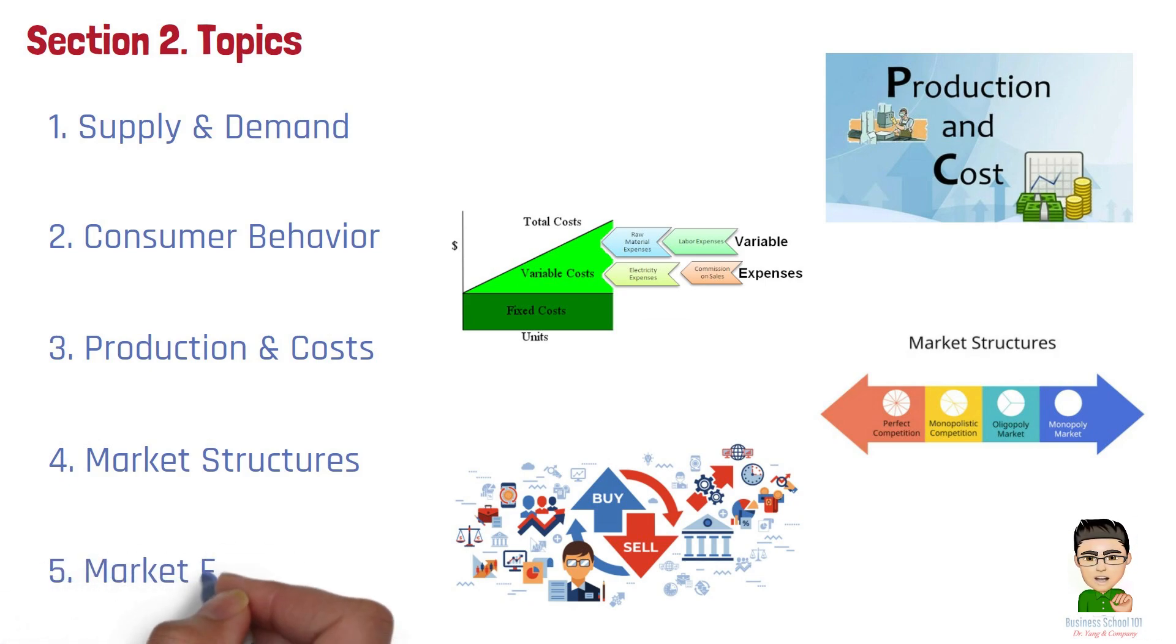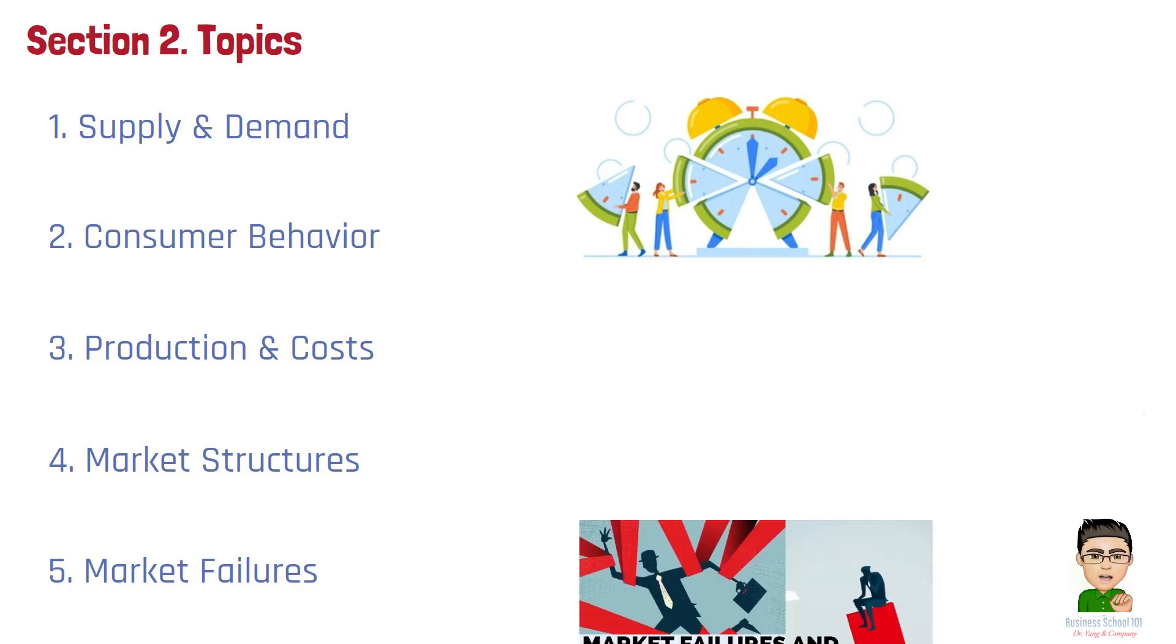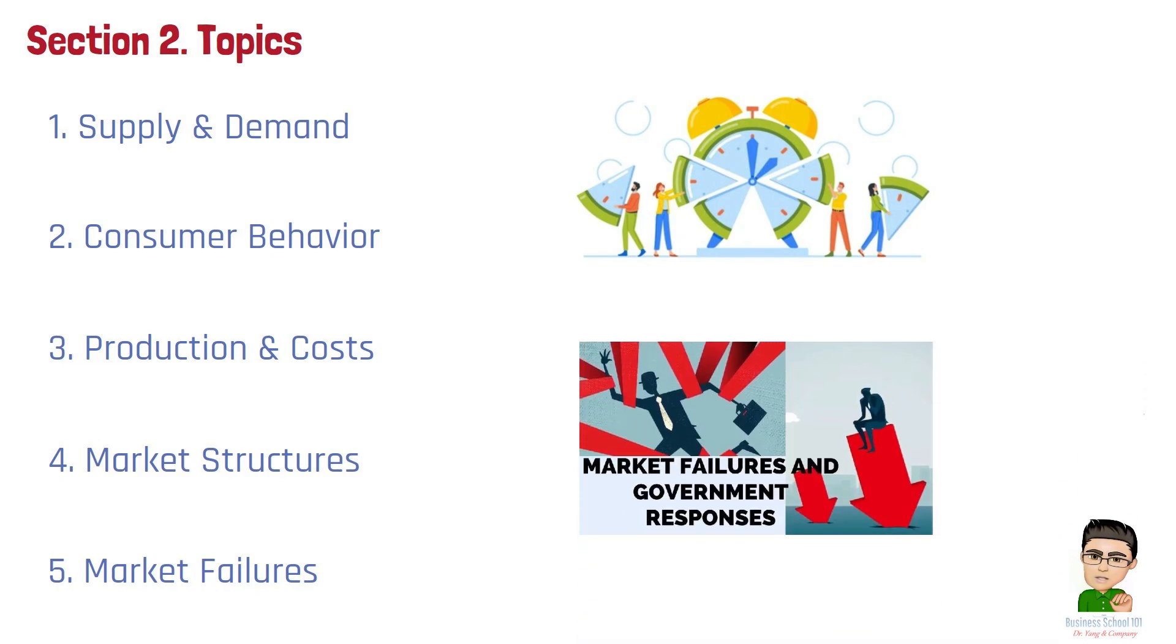Number 5. Market Failures. Market failures occur when markets do not allocate resources efficiently on their own, often due to externalities, public goods, or market power. These failures lead to socially undesirable outcomes, such as pollution or under-provision of public goods, and often require government intervention to correct and achieve a more efficient allocation of resources.